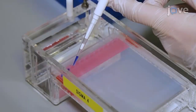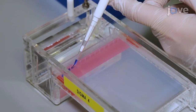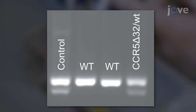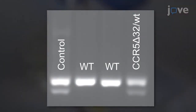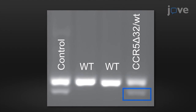At the end of the reaction, separate the PCR products on a 2% agarose gel. PCR products from the wild-type alleles and the Delta 32 alleles yield PCR fragments of 196 base pairs and 164 base pairs respectively, making the bands easily distinguishable by gel electrophoresis.